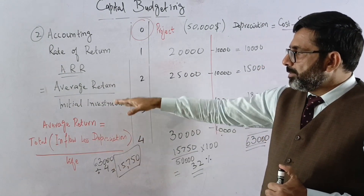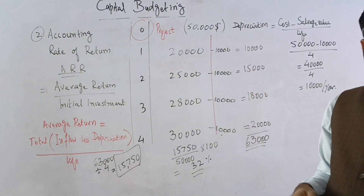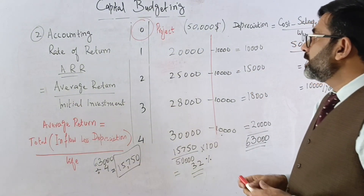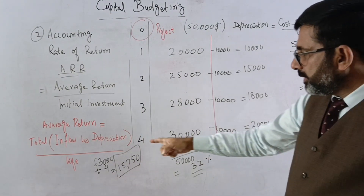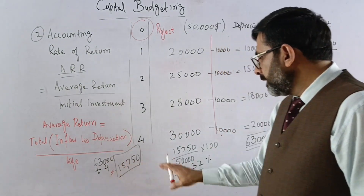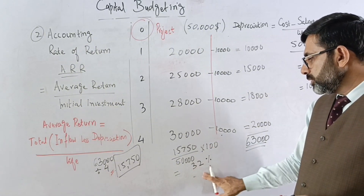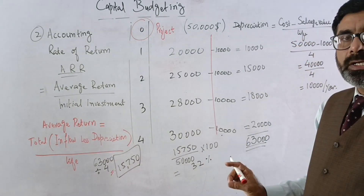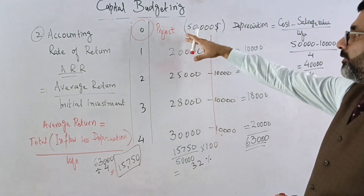The initial investment, or total project outflow, was 50,000. The average return was 63,000 divided by 4, which is 15,750. So 15,750 divided by 50,000 multiplied by 100 gives approximately 32% as the total average return on the asset.